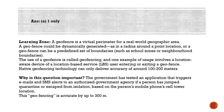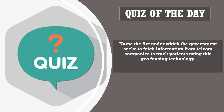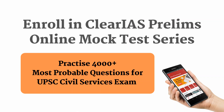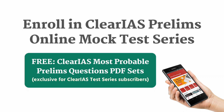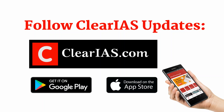For tracking COVID-19 patients, the government tested an application that triggers email and SMS alerts to an authorized government agency if a person has jumped quarantine or escaped from isolation. Geofencing is accurate up to 300 meters — not up to 10 kilometers, which makes Statement 2 incorrect. Today's quiz question is: under which act does the government seek to fetch information from telecom companies to track patients using geofencing technology? Please post your answers and scores in the comment section. That's all for today — we'll meet tomorrow with another set of questions. Thank you for watching.